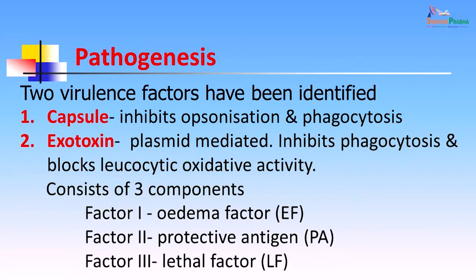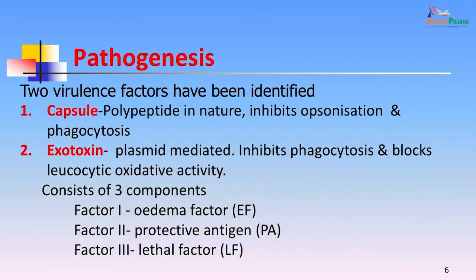The pathogenesis of anthrax depends on two virulence factors. First is the capsule, which inhibits opsonization and phagocytosis; a non-capsulated strain often used in vaccines is not infective. Second is the exotoxin, which is plasmid-mediated and inhibits phagocytosis and blocks leukocytic oxidative activity. The exotoxin consists of three components: Factor 1, Factor 2, and Factor 3.